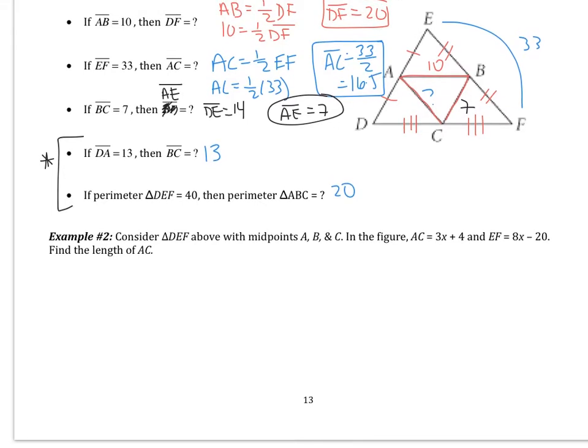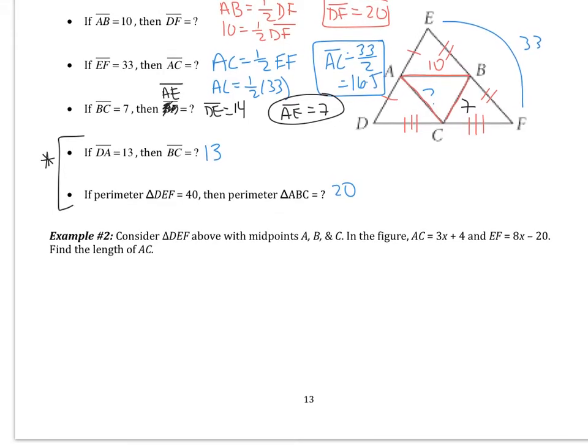Problem number 2. It says consider triangle DEF above with midpoints A, B, and C. In the figure, AC is 3X plus 4, and EF is 8X minus 20. Find the length of AC. So I'm going to redraw this triangle from above. So it probably would be a good idea if you did the same thing.